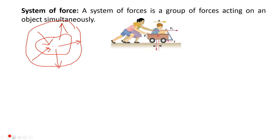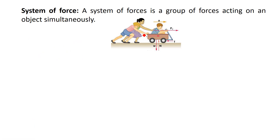For example, looking at this picture, there are two push type forces applied by two kids. One kid is sitting, his weight acting vertically downward. There is some resistance offered by the road to the wheel. So combinedly, there are multiple forces acting on the object, and this is called a system of force.